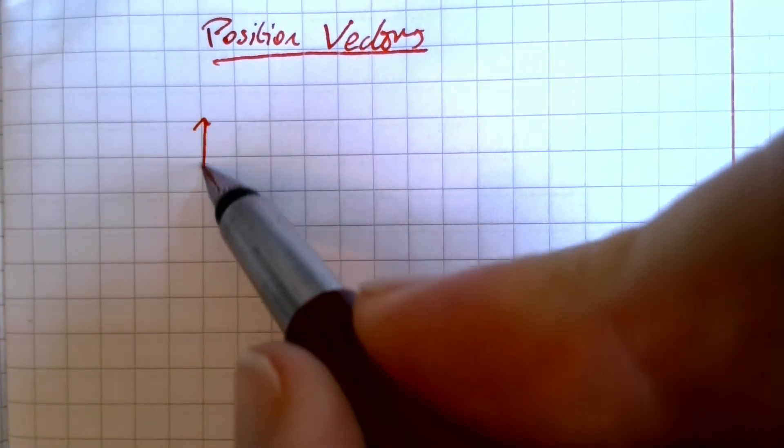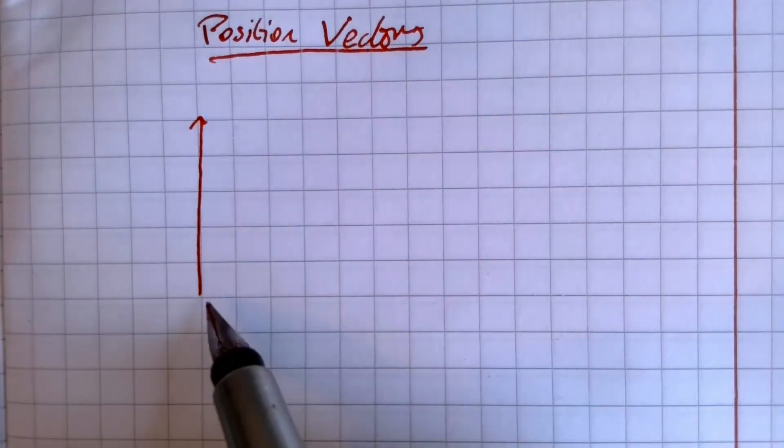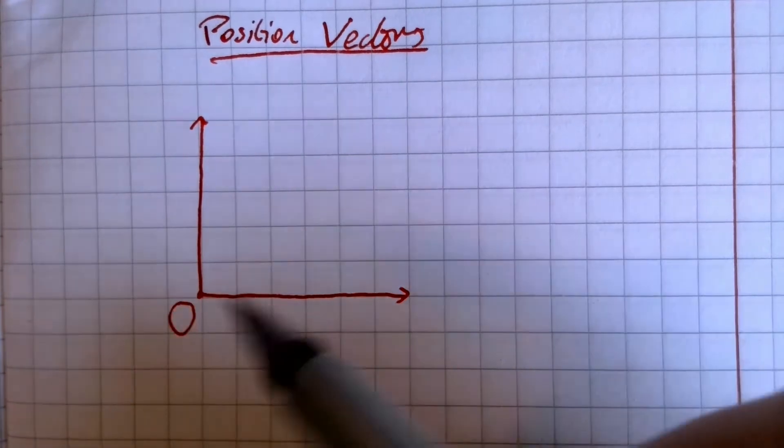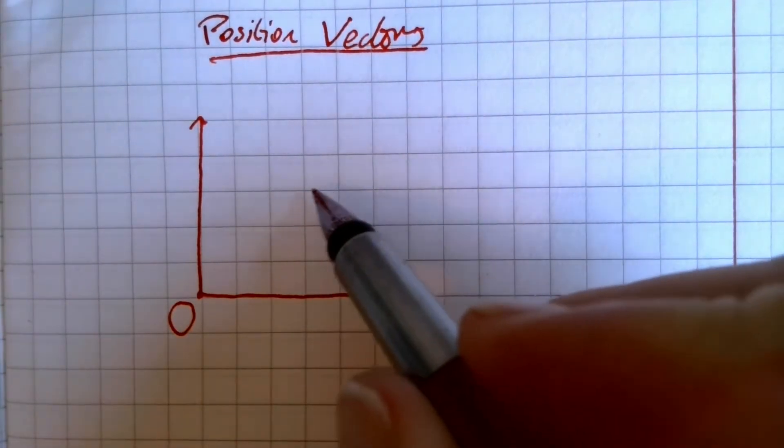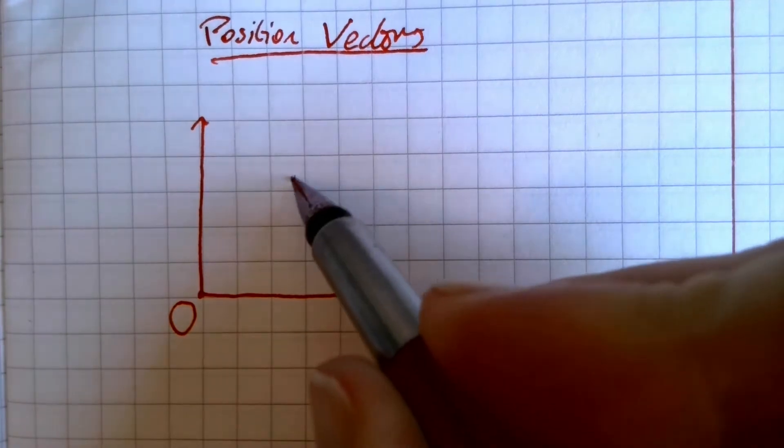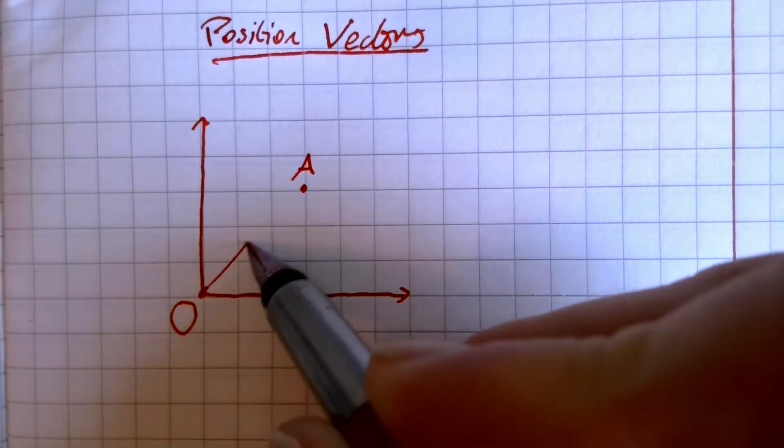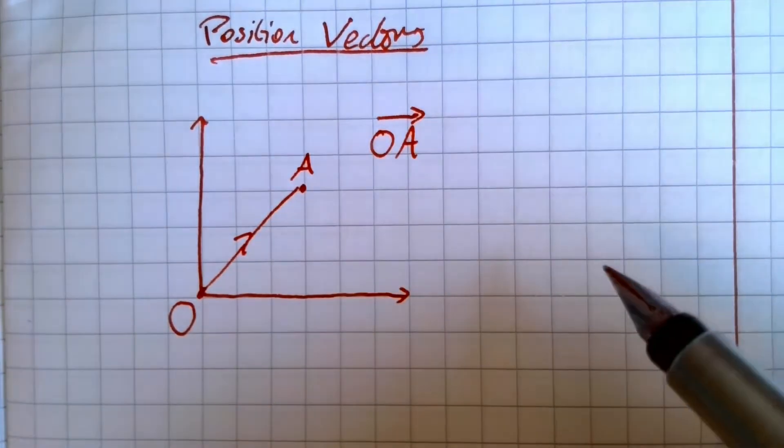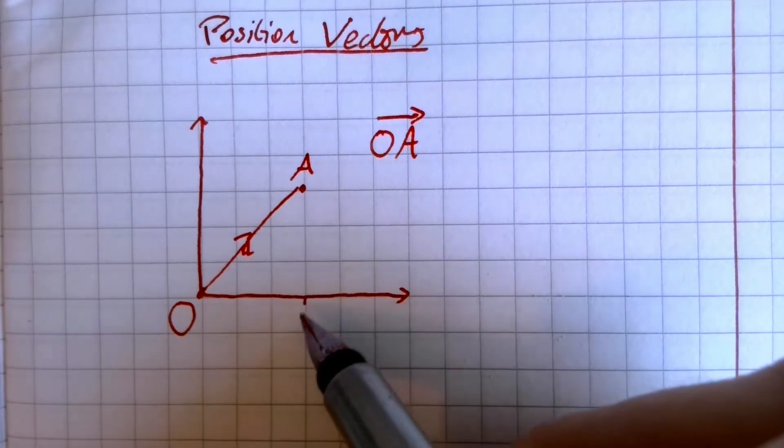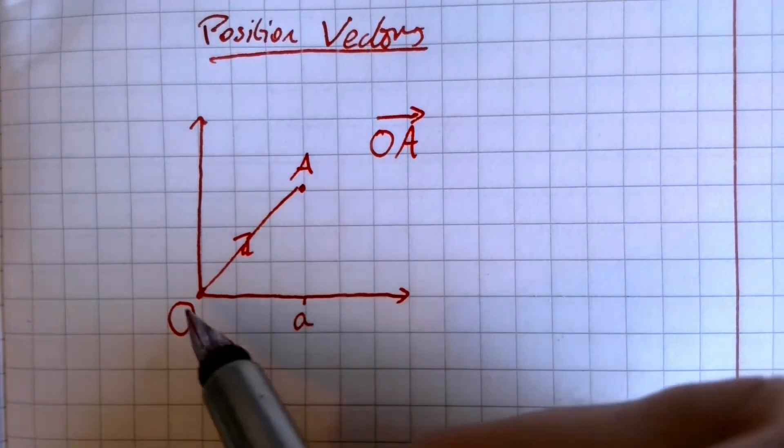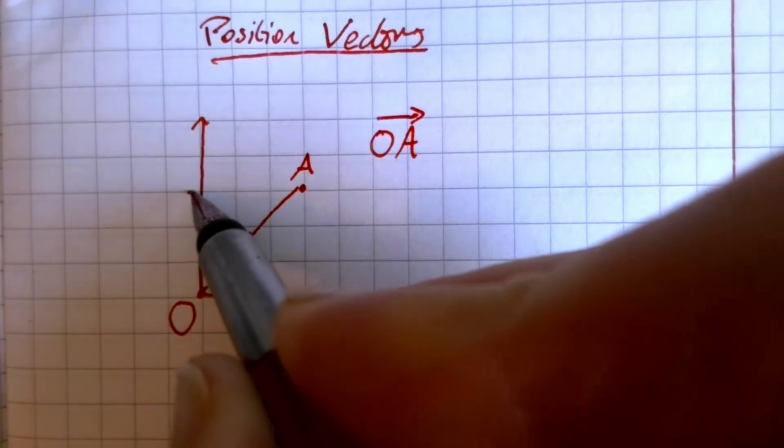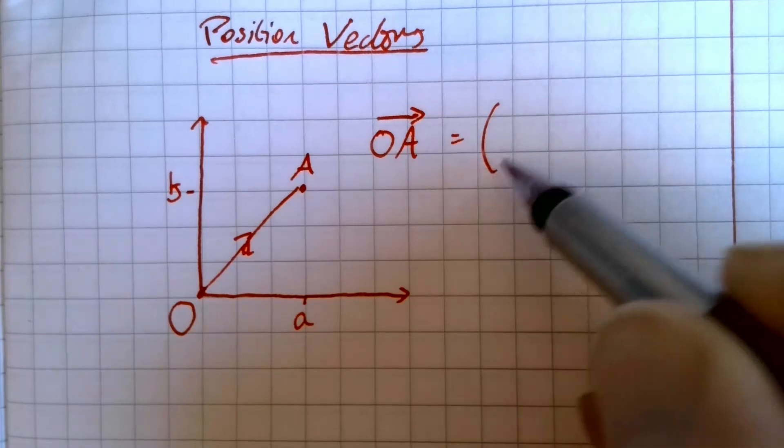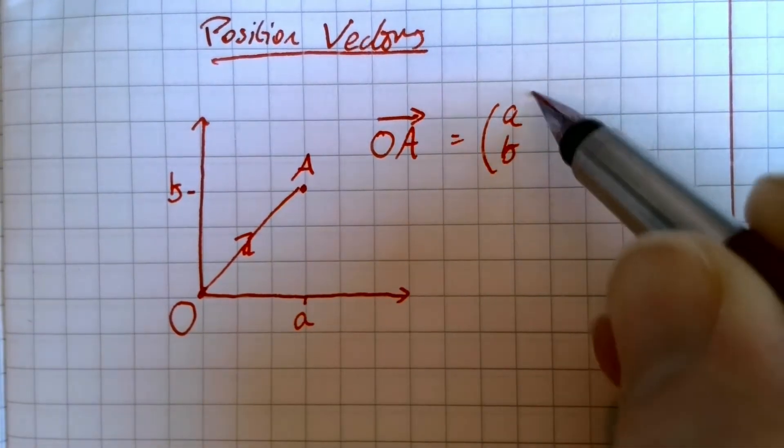So a position vector is really another way of just saying the coordinates of a point. So if I've got A there, the position vector would be called OA, and if the distance along I was A, and up J was B, you could call that A over B.